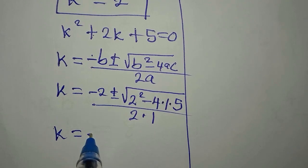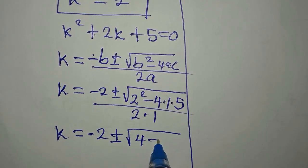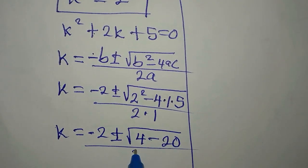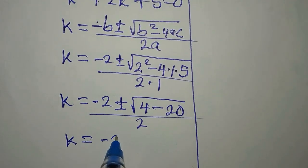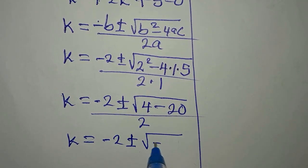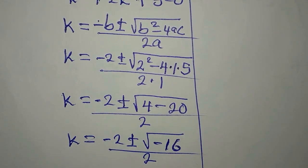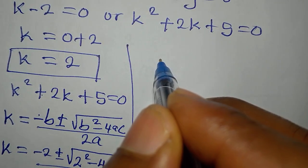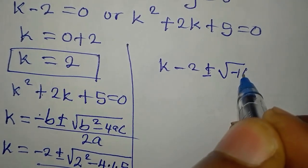Simplifying: k equals negative 2 plus or minus the square root of 4 minus 20, divided by 2. So k equals negative 2 plus or minus the square root of negative 16, all over 2.